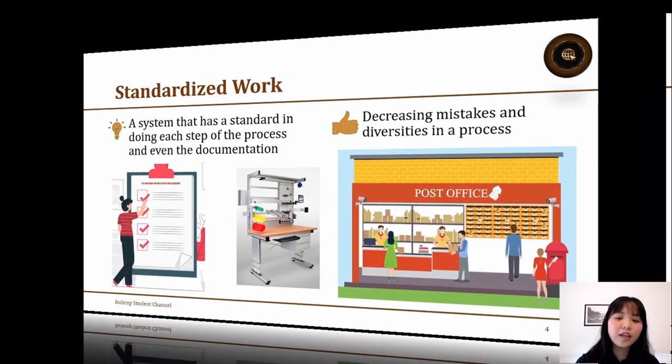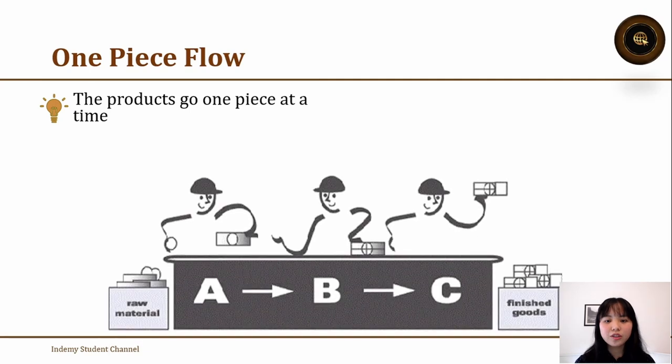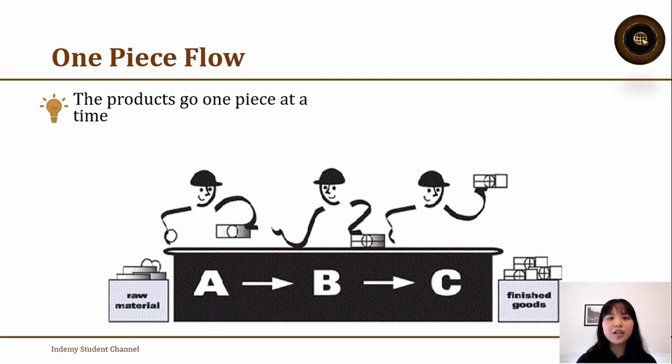The next tool is called one piece flow. One piece flow means the products go one piece at a time. If we take a look here in the example, we can see the worker in station A doing one product, and then when he finishes he sends it to station B, and when station B is finished then he sends it to the worker in station C, and just like that until they finish their shift. There will be only one product in a workstation, then it goes directly to the next workstation.